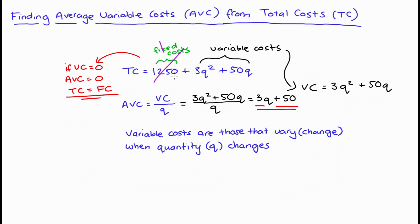You might also get an example where there is no fixed cost component to total cost, in which case total costs will be equal to variable costs, and average variable costs would actually be equal to average total costs, which we find by dividing total costs by quantity. All right, that's it. That's finding average variable costs from a total cost function.